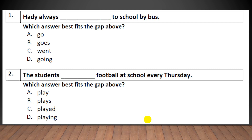Now let's practice the tenses. The key word is 'always', which indicates present simple. For the singular subject, I use 'goes'. The student plays football at school — the key word is 'every'. The subject here is plural, so I keep the verb as it is: 'play'. The students play football at school.